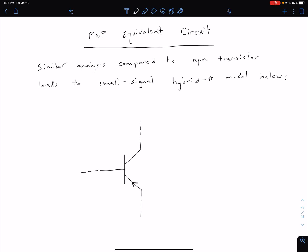If we're talking about a PNP transistor, then we're going to need to slightly adjust our hybrid pi model. We're not going to go through the full analysis, but through similar analysis, just take our word for it that you can get the small signal hybrid pi model that we're about to show.